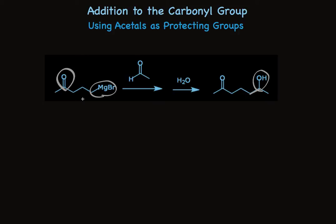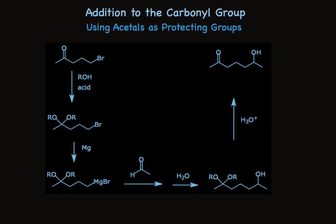Here's the scheme. The ketone is treated with an alcohol and acid to generate the acetal. Because the acetal is inert to Grignard reagents, you can then make the Grignard reagent by treating with magnesium. Carry out the Grignard reaction itself to make the alcohol you want, but it still has the acetal functionality. That acetal can be removed by treating with aqueous acid. You've achieved the conversion you want without interference by the ketone carbonyl — very clever, very effective.